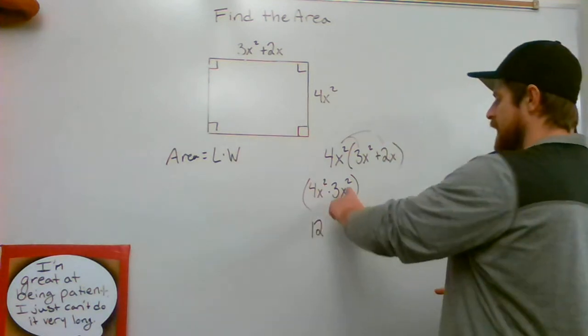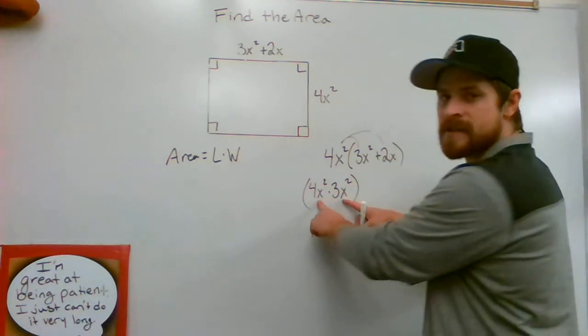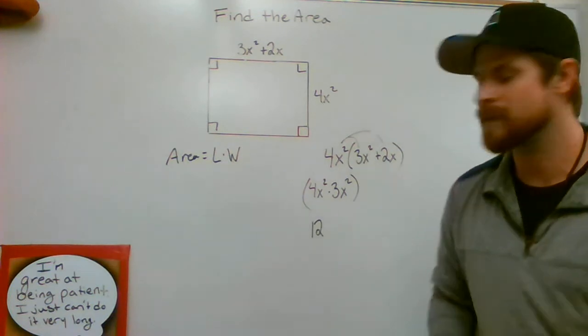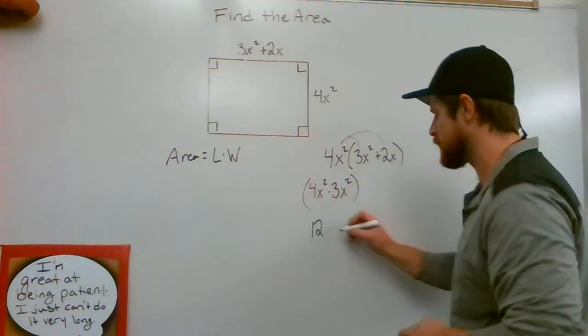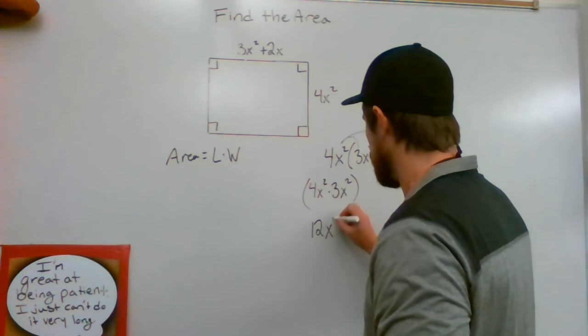4 times 3 is going to give me a 12. And x squared times x squared, my bases are the same. Product rule tells me to just add my exponents, 2 plus 2, to get x to the 4th.